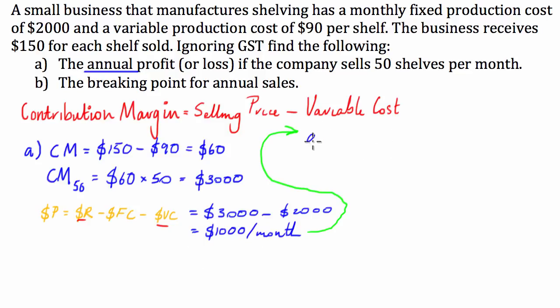So, if we're making $1,000 a month profit, annually it's going to be equal to $1,000 times 12 months in a year, which is equal to $12,000 per annum profit.